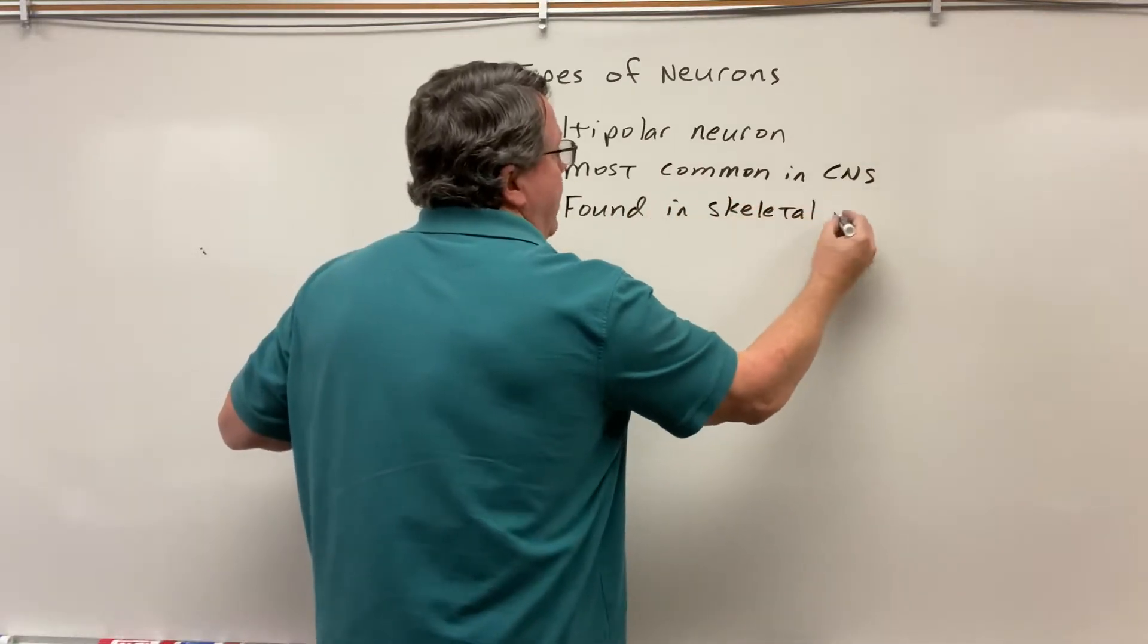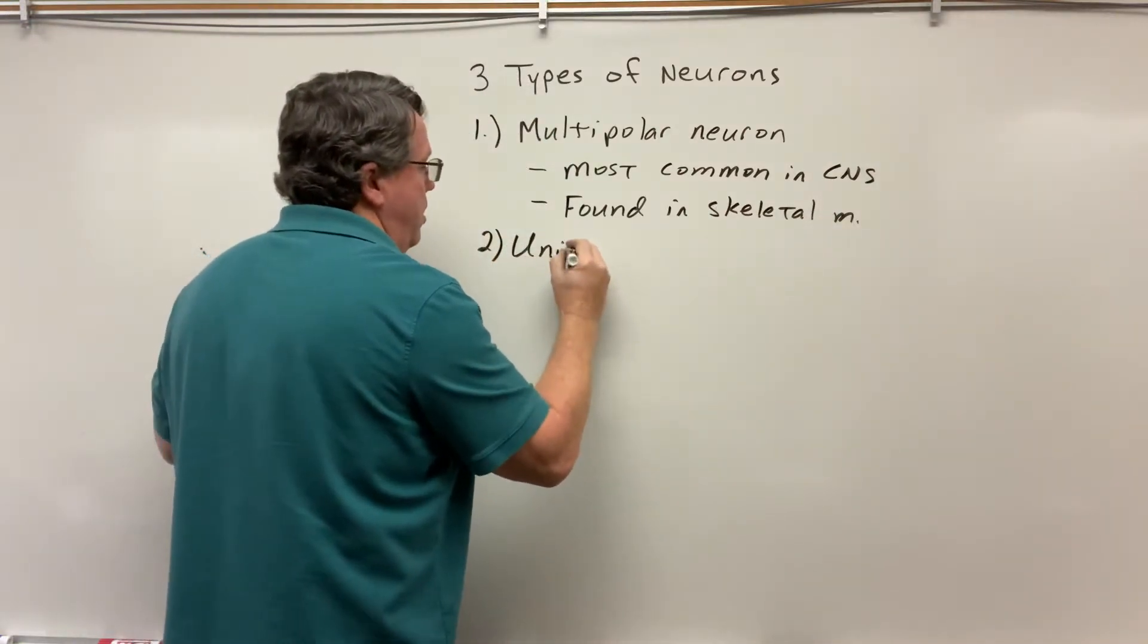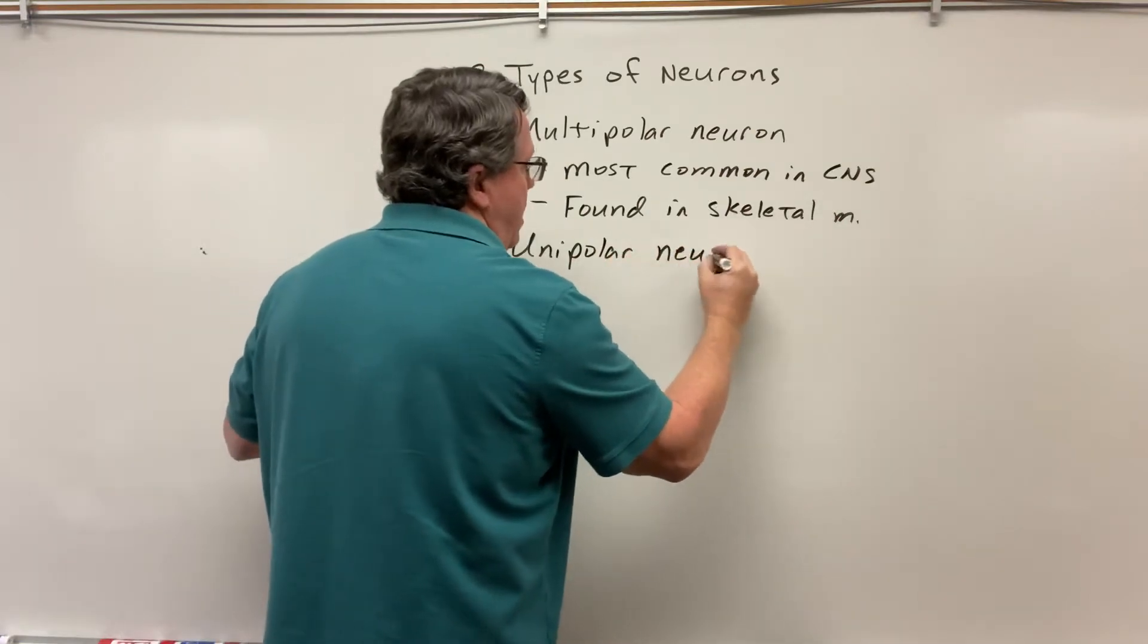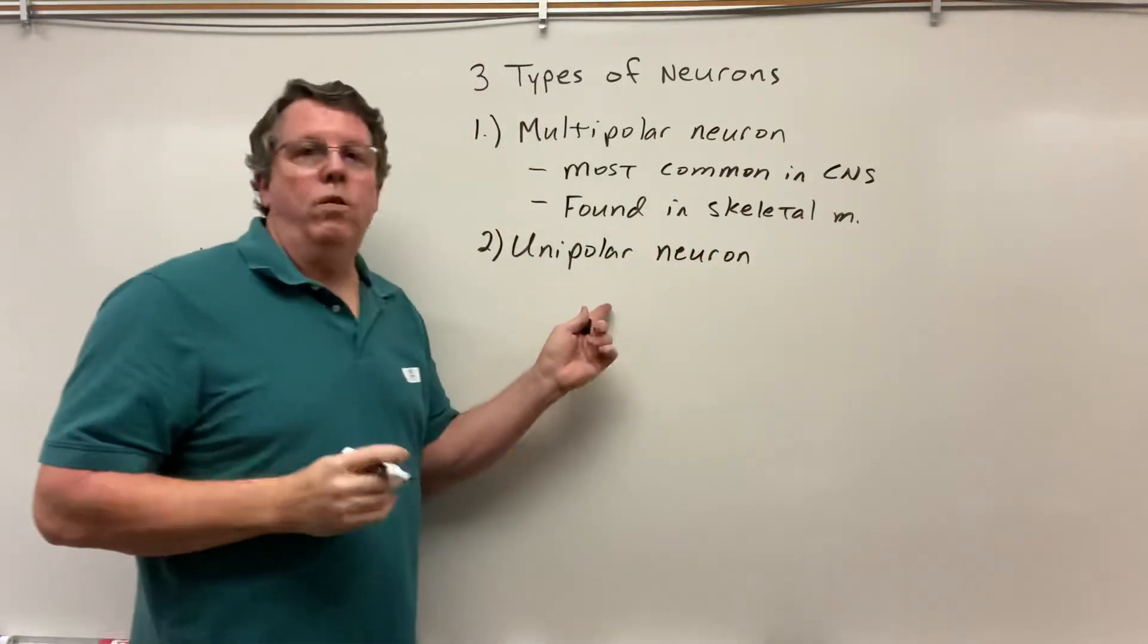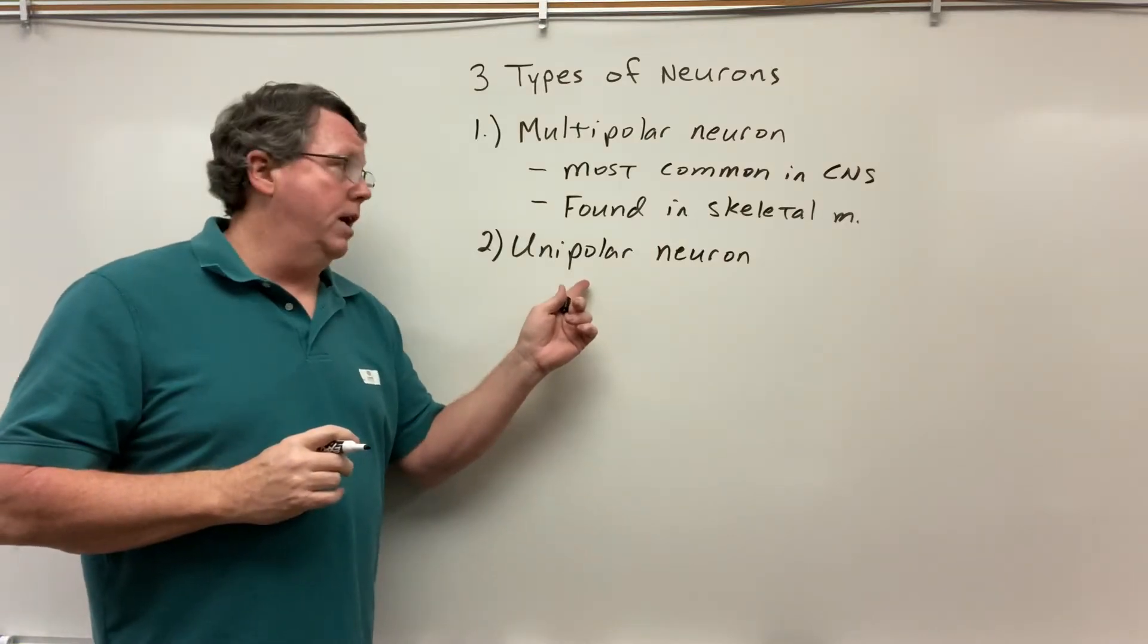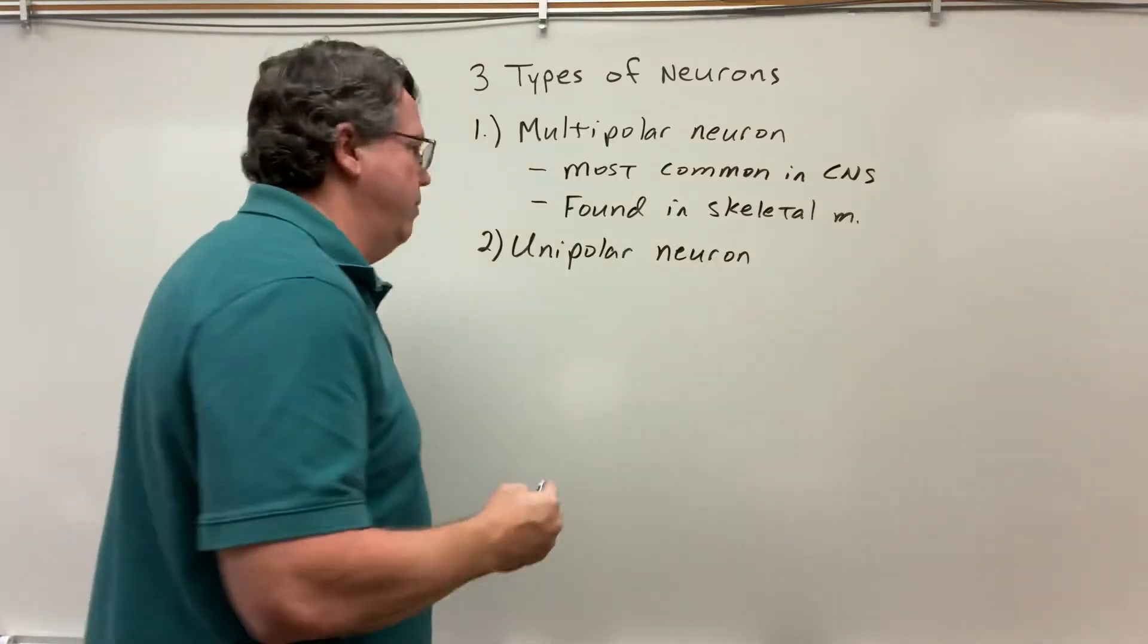The second type is what we call a unipolar neuron. These are going to be found in the peripheral nervous system. They're sensory neurons in the peripheral nervous system.